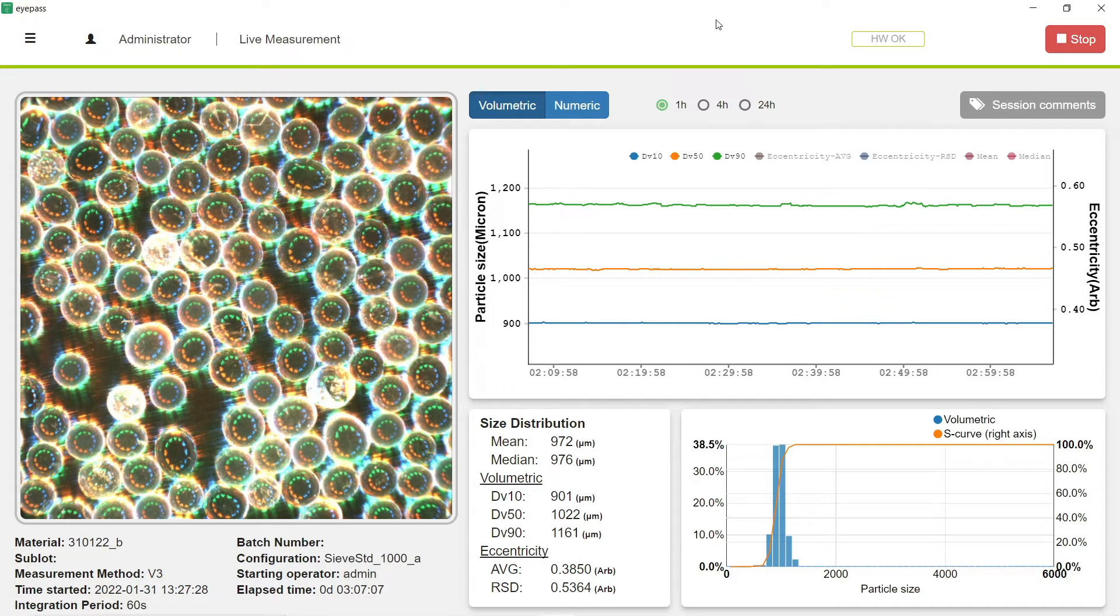This is actually glass beads used for sieve standards. These are certified 1000 micron glass beads that are used throughout industry to verify that your sieves are operating correctly. We use these on purpose here to train our image analysis software for what is 1000 microns, and we can see the results we're getting back in real time non-product contact fashion.